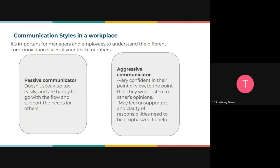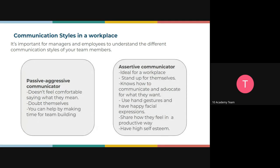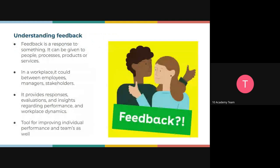So we've identified the four communication styles: the passive communicator who doesn't really speak up, the aggressive communicator, the passive-aggressive communicator, and the assertive communicator. Think to yourself which one you identify with, or think of someone you've worked with. Once you understand the style someone has, you'll be able to manage the relationship better. In the workplace, we always try to be assertive communicators.